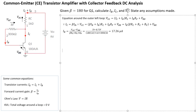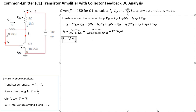Now that we know IB, we can work out IC using the relationship β = IC/IB, so IC = β·IB. That's 180 × 17.26 µA, which works out to IC = 3.11 mA.